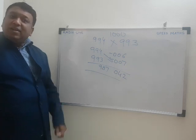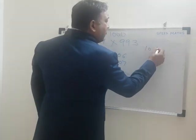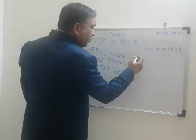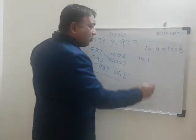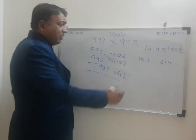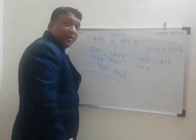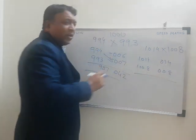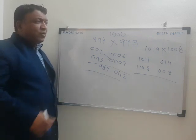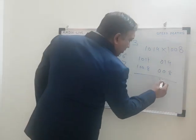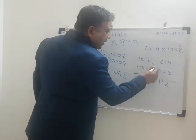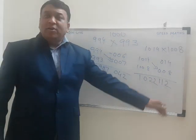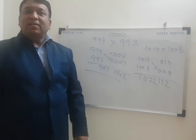Let's take a number above 1000: 1014 into 1008. 1014 minus 1000 equals 14; 1008 minus 1000 equals 8. Now 14 into 8 equals 112. I write down 112. For the left part: 1014 plus 8 equals 1022. So the answer is 1022112. This is easy — we can multiply any two numbers this way in 3 or 4 seconds. This is our Speed Maths.